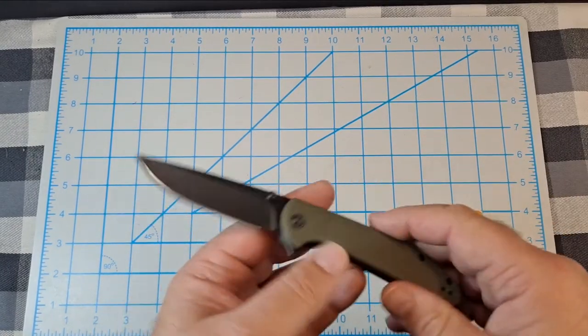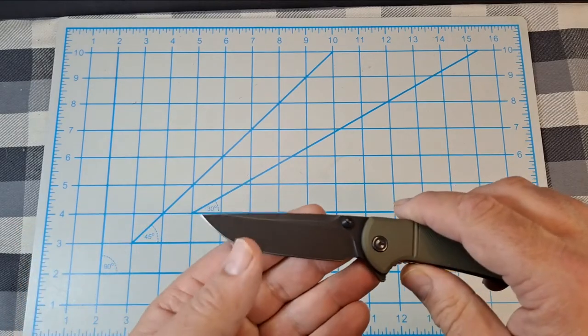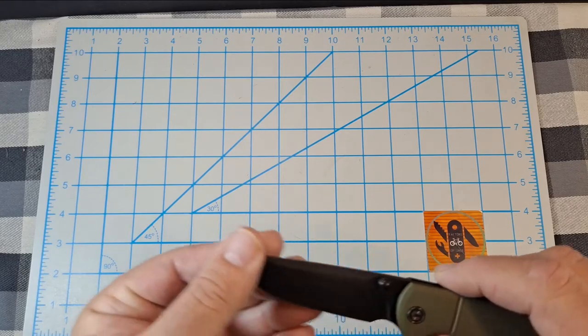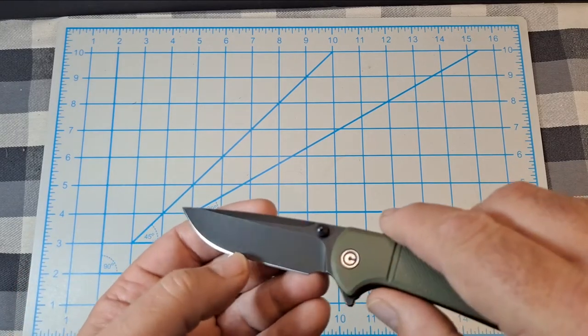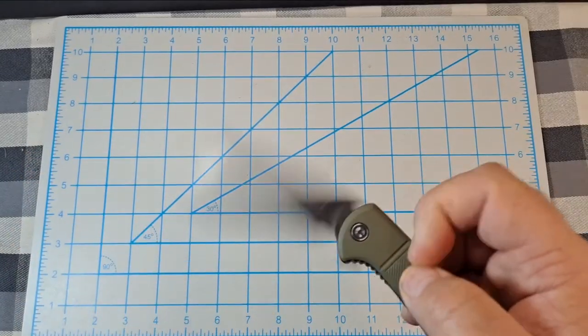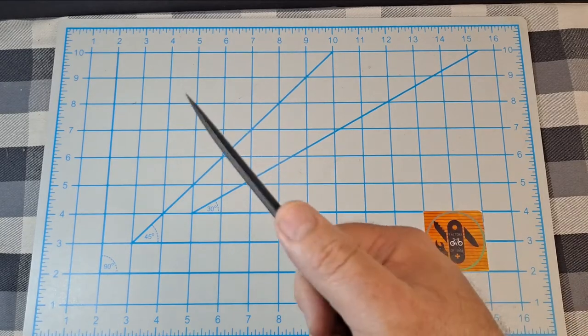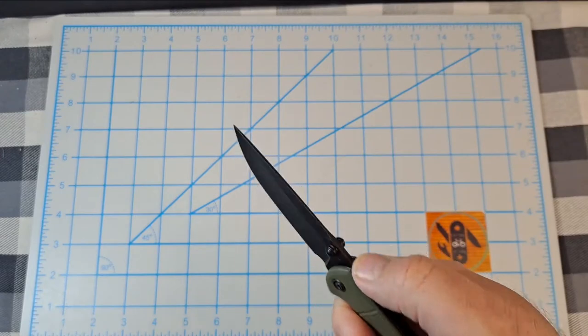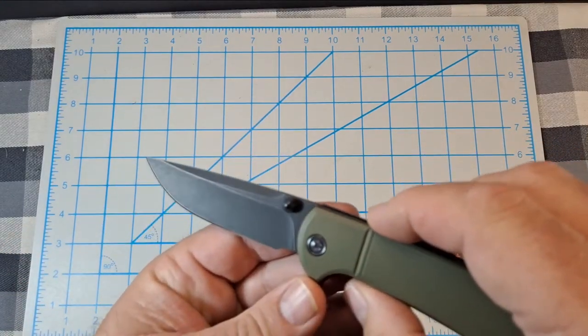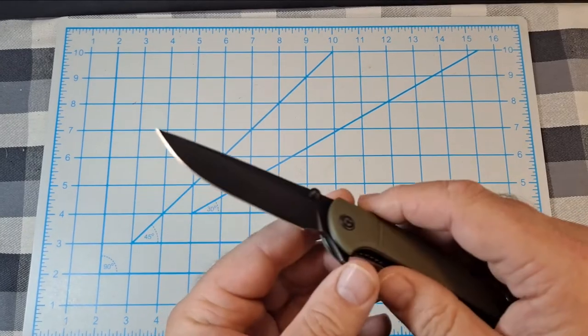What do you get with this? You get a 3.25 inch 9CR 18MOV steel blade. I like 9CR, works good for me. It's black wash. I like Civivi's black wash. It's a flat grind, got a nice wedge up here. It's thumb stud or flipper tab. It's got a finger choil that works pretty good even for my fat fingers. I can choke up. Like the Ortis, doesn't have any jimping on top of the blade. I kind of wish it did. But yeah, that's pretty much the blade. It's a pretty nice blade. I like the drop point.